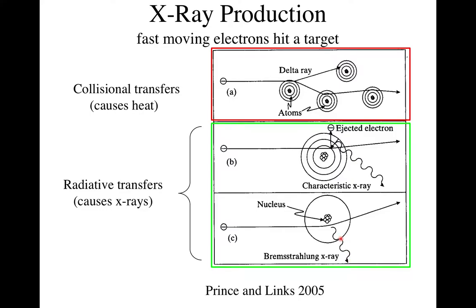Bremsstrahlung photons are released at energies anywhere from the maximum possible down to zero. If a 140 keV electron gets completely stopped, a 140 keV photon comes out. If it takes a hard turn but isn't fully stopped, lower energy comes out. So we get a spectrum of photons from this process.